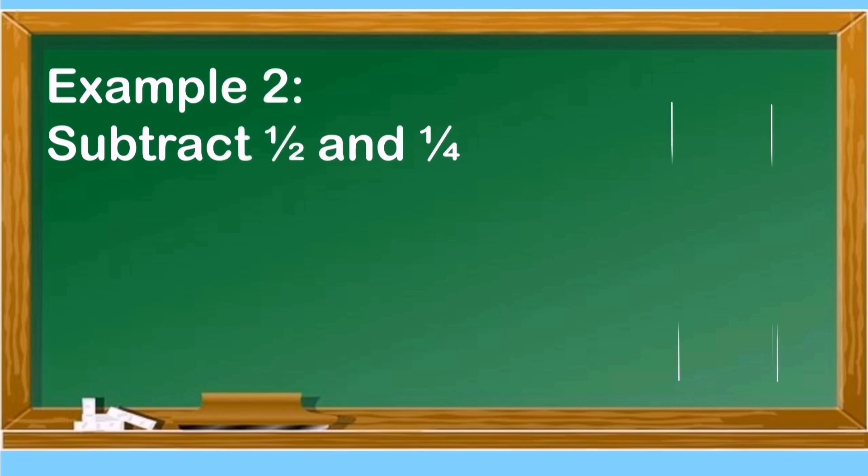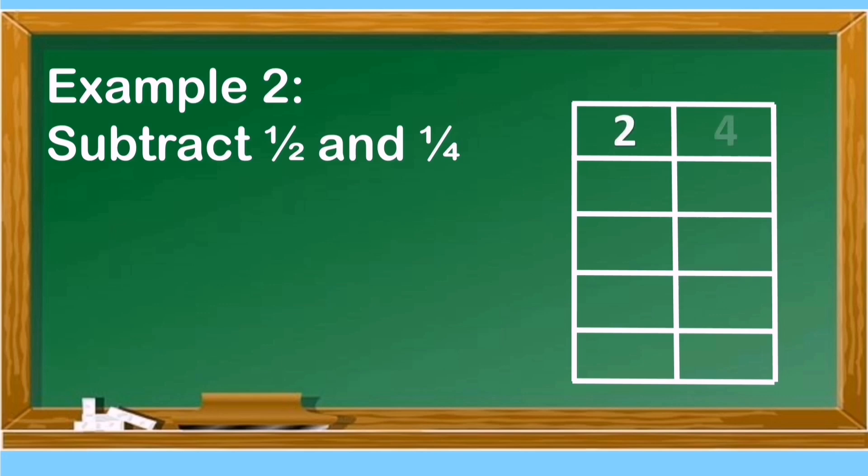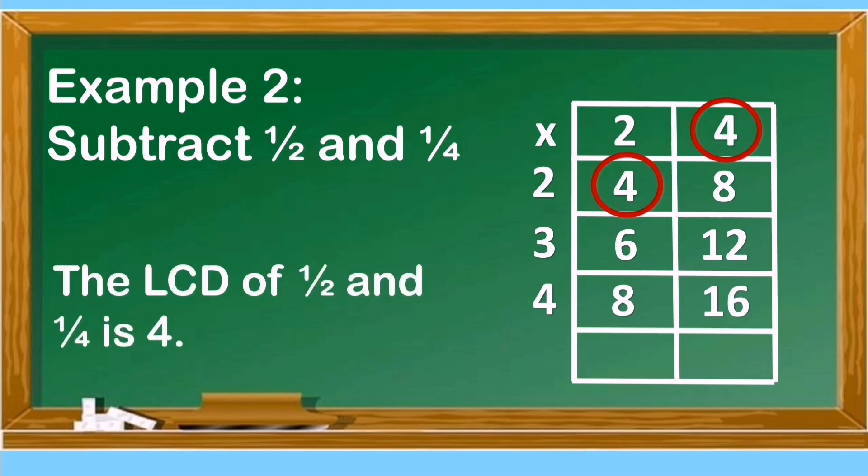Example number 2, subtract 1/2 and 1/4. We will use the same process. We need to find first the LCM of 2 and 4. Don't forget that we need to get the least common multiple of 2 and 4, and that is 4. The LCD of 1/2 and 1/4 is 4.